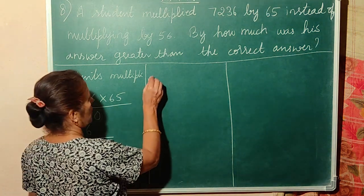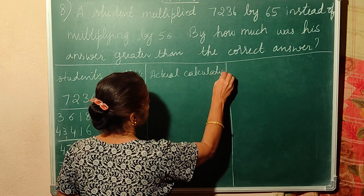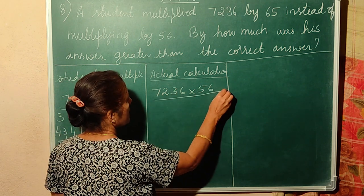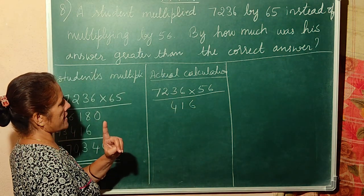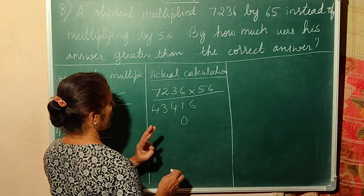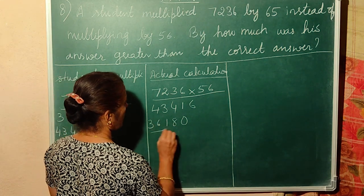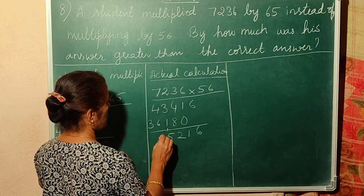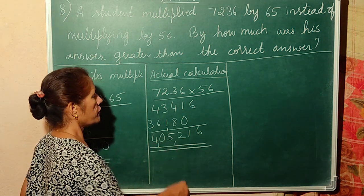Now what was the actual calculation? It had to be 7236 into 56: 6 sixes are 36, 6 threes are 18 plus 3 = 21, 6 twos are 12 plus 1 = 14, 6 sevens are 42 plus 1 = 43. Then 5 sixes are 30 (leave blank), 5 threes are 15 plus 1 = 18, 5 twos are 10 plus 1 = 11, 5 sevens are 35 plus 1 = 36. Adding: 1, 8+4=12, 1+1=2, 2+3=5, 6+4=10, 1+3=4. Answer: 405,216.